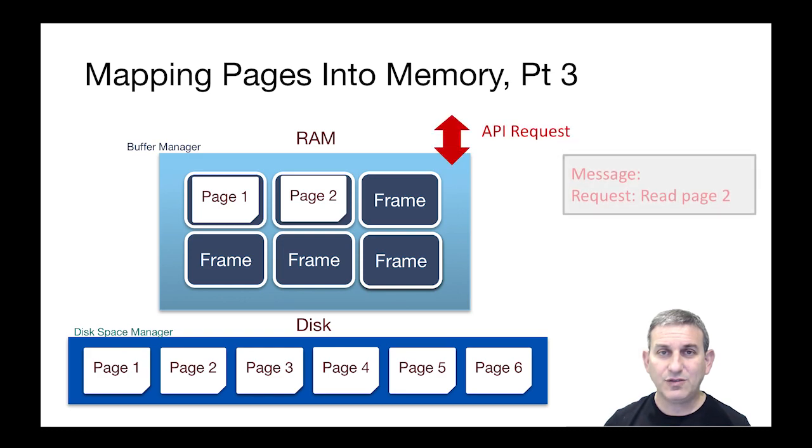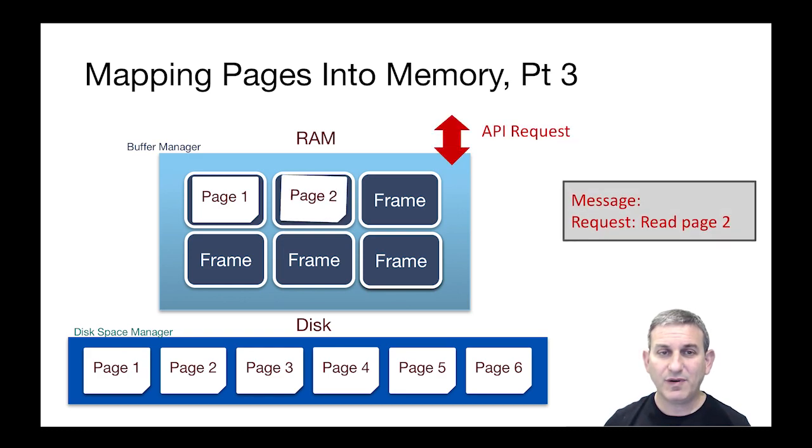Now, if somebody tries to access page 2 again, this time the buffer manager says, hey, I already have page 2 and it doesn't involve the disk space manager at all, simply returns a pointer to the frame in memory where page 2 is already located.